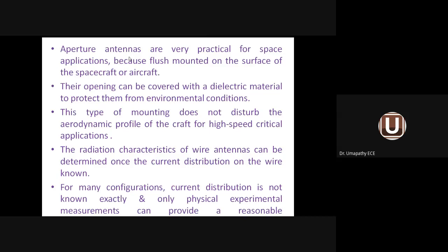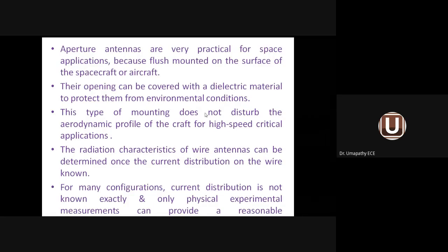These aperture antennas are used in the microwave frequency range. Practically they are used for space applications because they are flush-mounted on the surface of a spacecraft or aircraft. For example, a satellite moving in free space will use aperture antennas. The opening is generally covered with a dielectric material to protect it from environmental conditions — through the opening only, radiation of electromagnetic waves goes into free space.